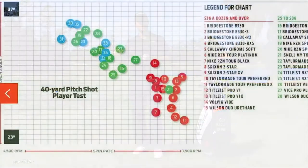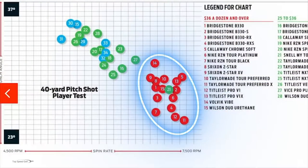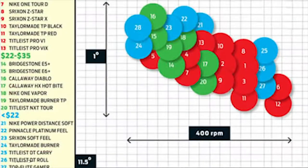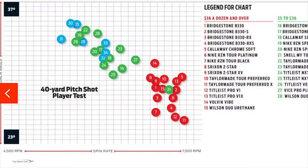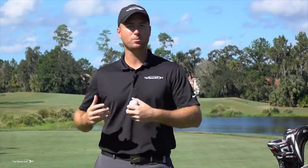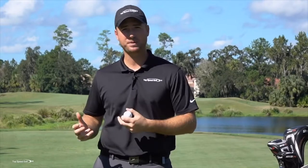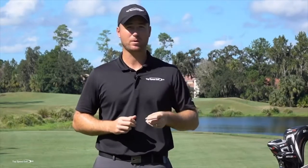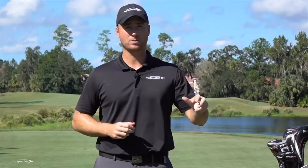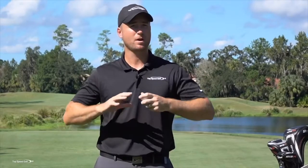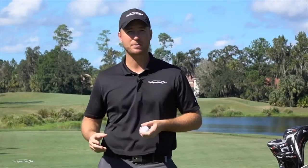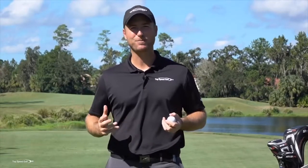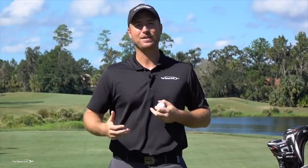Another trick is the naming. Premium golf balls get wedge spin by decreasing driver spin. Cheaper balls behave the same off the driver, but on wedges they don't have the spin. Companies try to trick you by naming cheaper golf balls 'Soft,' 'Super Soft,' 'Ultra Soft,' or 'High Spin.' Those fifteen to twenty dollar per dozen golf balls are not going to spin anywhere near what premium golf balls will. That's all just marketing to get you to buy a cheaper ball — it's not really going to work that well for you.